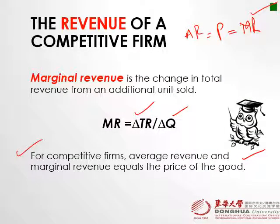Marginal revenue is also equal to the price for competitive firms. So for competitive firms, average revenue and marginal revenue are both equal to the price. We already know that average revenue equals price, and now we are also saying marginal revenue equals price as well. We need to prove this, so let's prove it.